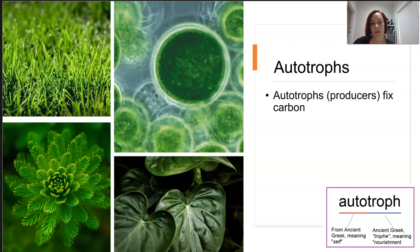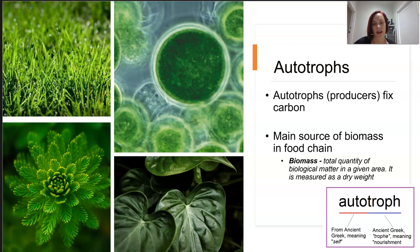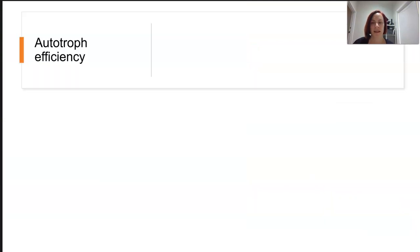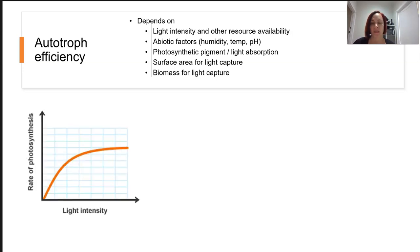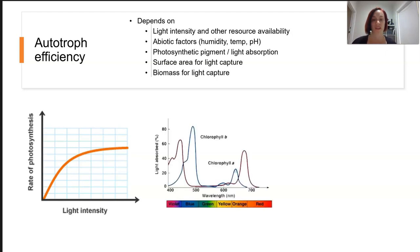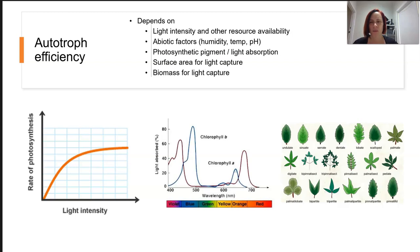Autotrophs are also known as producers. They are the main source of biomass in a food chain, biomass being the total mass of living matter in an ecosystem. Producers create biomass from sunlight. Not all producers are created equal — the amount of biomass a producer generates depends on its photosynthetic efficiency, which varies based on the amount of light available, the intensity and color of that light, and the type of organism, such as whether it has wide leaves to collect more sunlight.